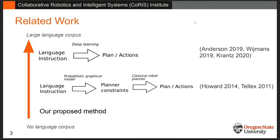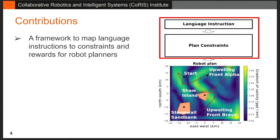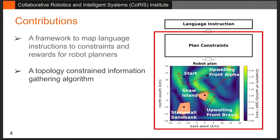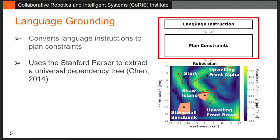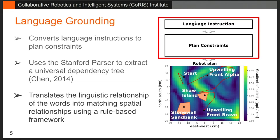Our contributions are: first, a framework that maps language instructions to planner constraints, and second, using this to generate interesting plans. We use the Stanford parser, a natural language processing tool that takes generalized knowledge from language texts to find the structure of a sentence, returning it as a dependency tree. We then have a rule-based framework that takes this dependency tree and breaks it down into grounded constraints.